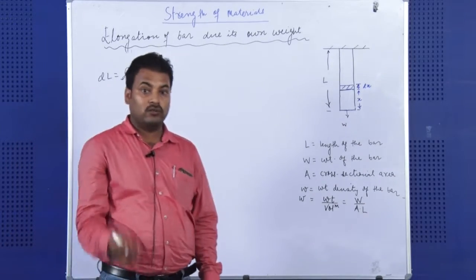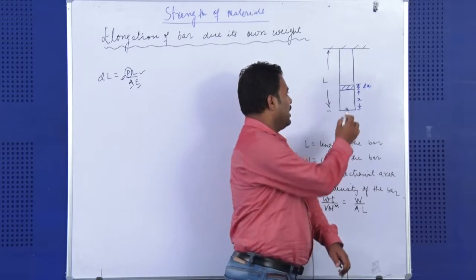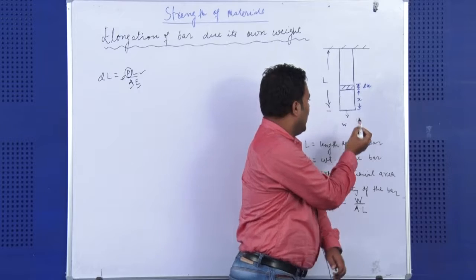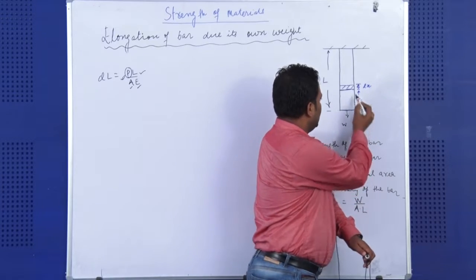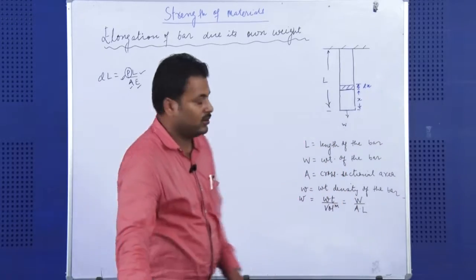In order to find out the total elongation, what we will do, as I have done in last class, I have taken an integral part. At this class, I have taken this integral length at a distance X from the bottom, and its length is DX.